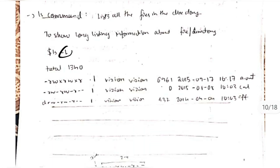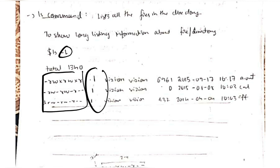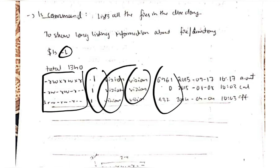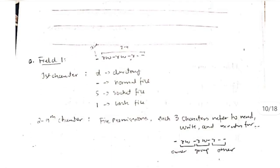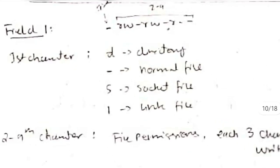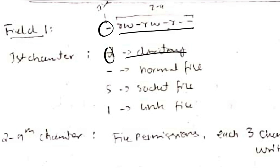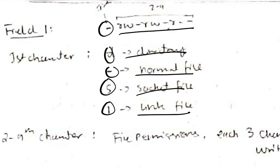If I write 'ls -l' — listen carefully, it is very important from an exam point of view — it will display these columns. There are eight fields: field 1 contains a dash followed by a nine-digit symbol. The first character indicates the file type: 'd' means directory, dash means normal file, 's' means socket file, and 'l' means link file. The next nine characters are file permissions, divided into three parts — first for the owner, second for the group, and third for others. 'r' means read, 'w' means write, 'x' means execute, and dash means no permission.